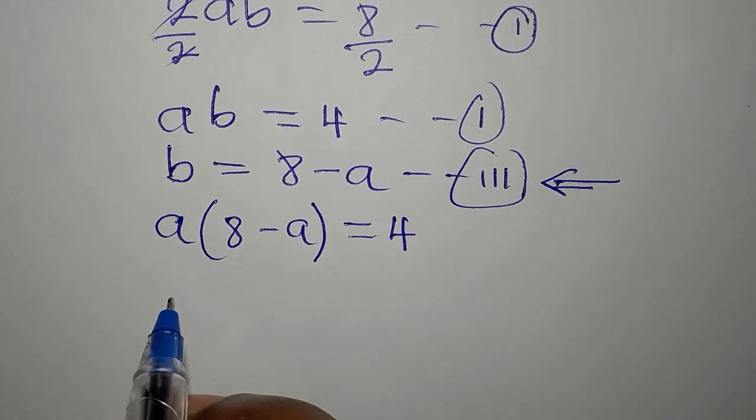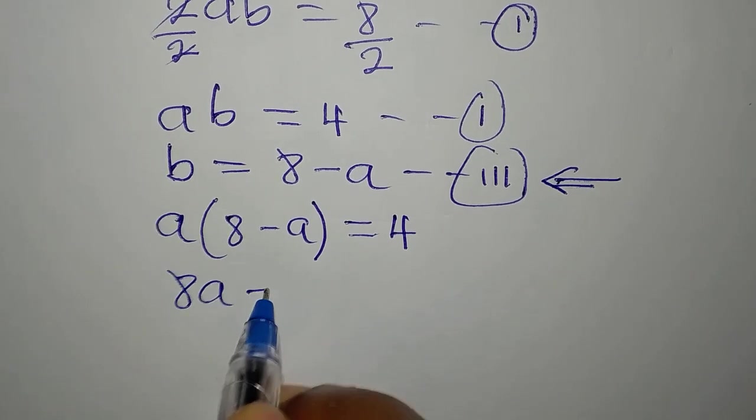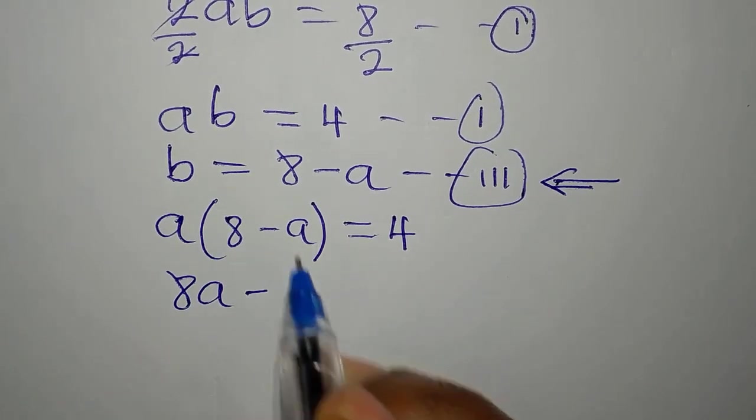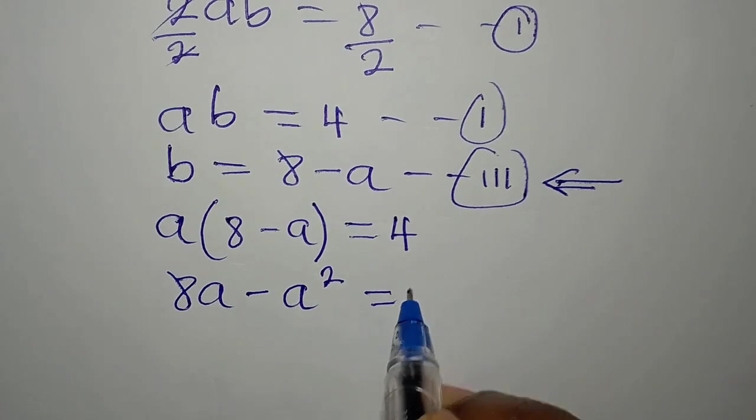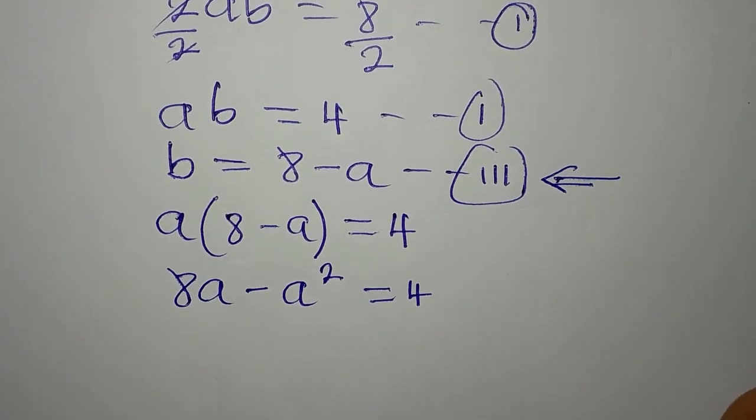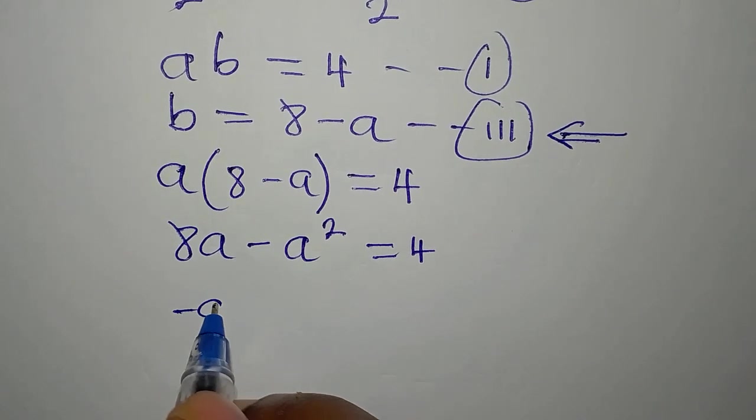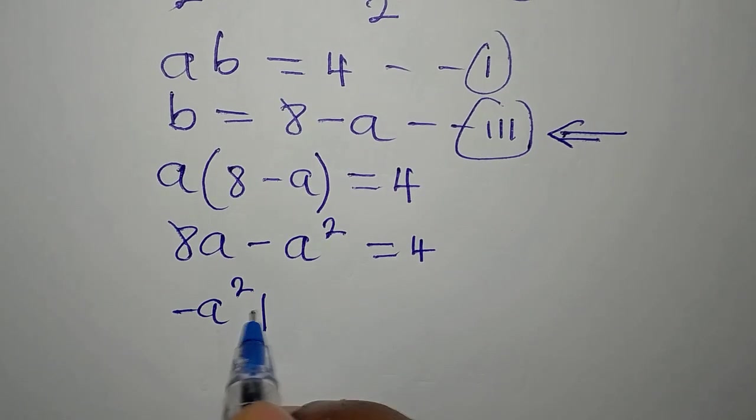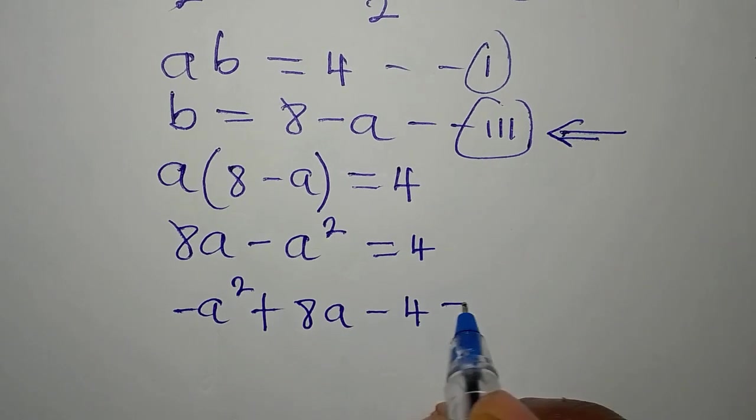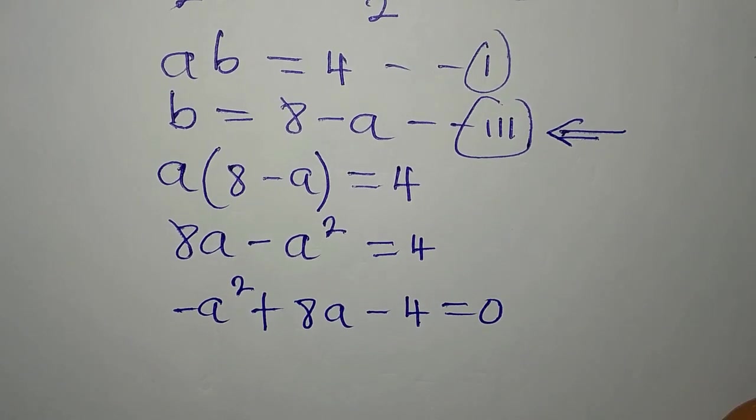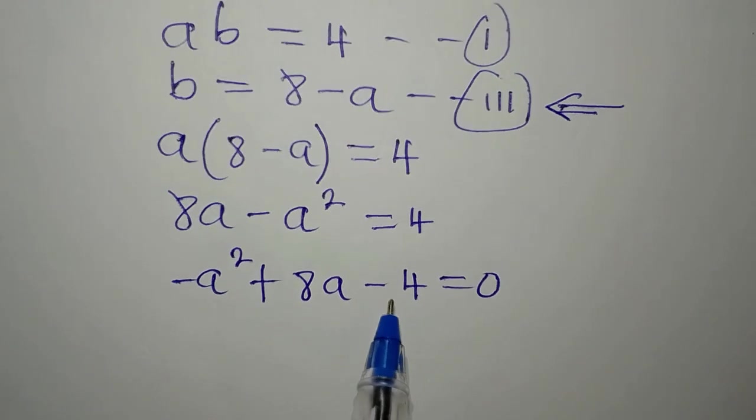Now, A times 8 is 8A, minus A times A will give us minus A squared. Then, this is equal to 4. By the way, this is a quadratic equation. And I want us to rearrange: minus A squared plus 8A minus 4 equals 0. What I did here is to bring 4 to the left and it becomes negative.